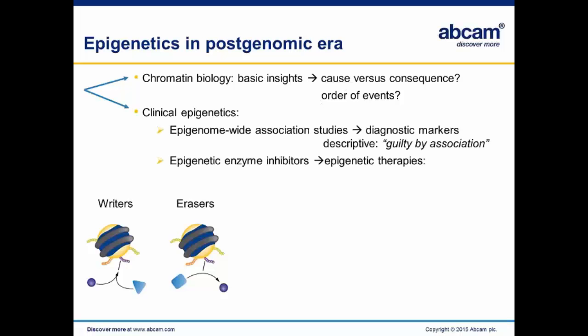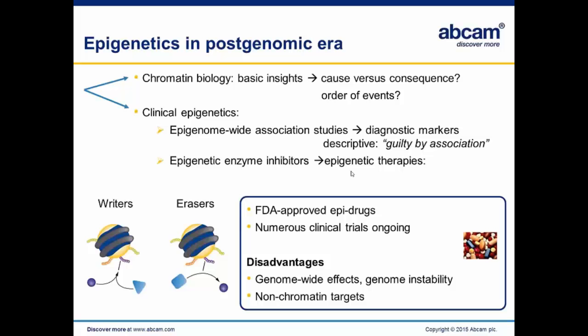Despite this, clinical epigeneticists initiated large-scale epigenome-wide association studies, and these studies have yielded putative diagnostic markers. However, to identify the biological function of these epigenetic mutations is technically challenging. The identification of many epigenetic mutations sparked the interest of pharmaceutical companies, and many inhibitors have now been designed for epigenetic writers, erasers, and even readers, resulting in epigenetic therapies. Some actually got FDA approved, but many more are being tested in clinical trials which are ongoing and expected to be initiated in the near future.